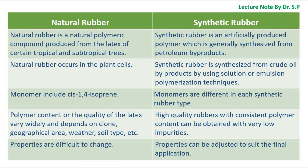The polymer content or quality of the latex varies widely in natural rubber and depends on clone, geographical area, weather, soil type, etc. High quality synthetic rubbers with consistent polymer content can be obtained with very low impurities.